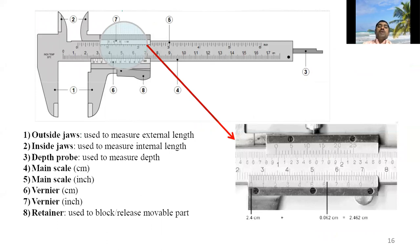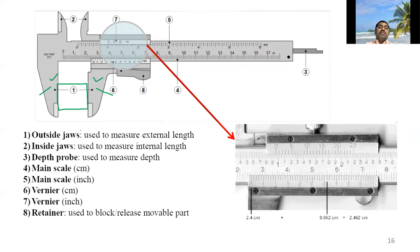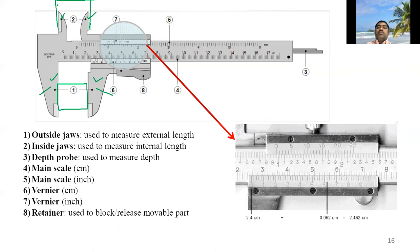Parts of vernier calipers include: outside jaws (one fixed jaw and one movable jaw) used for measuring external dimensions; inside jaws (fixed and movable) used for measuring internal dimensions; a depth probe used for measuring the depth of slots, recesses, or grooves; a main scale graduated in centimeters and millimeters; and another scale in inches. There is also a retainer used to block or release the movable part.